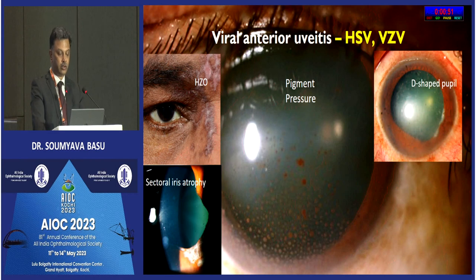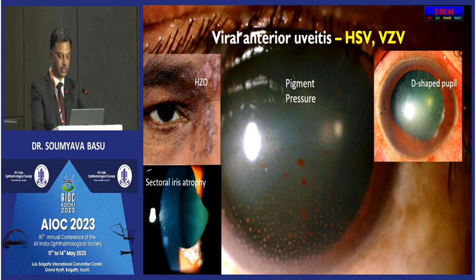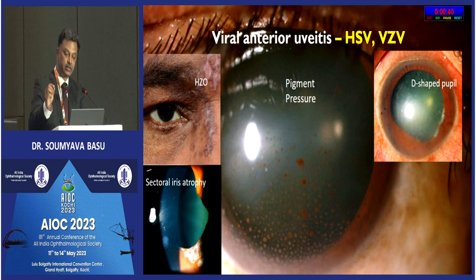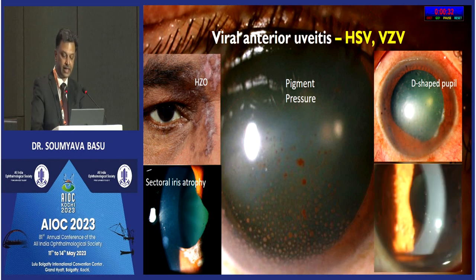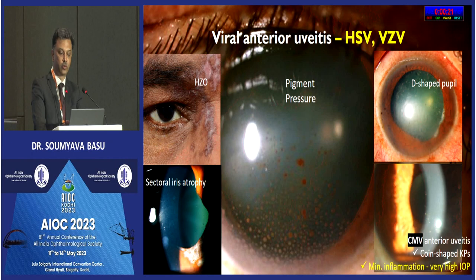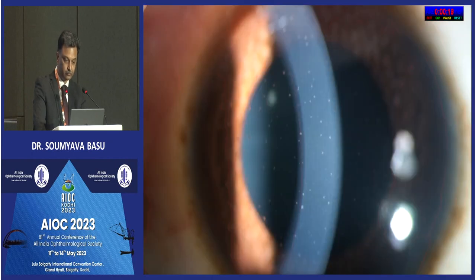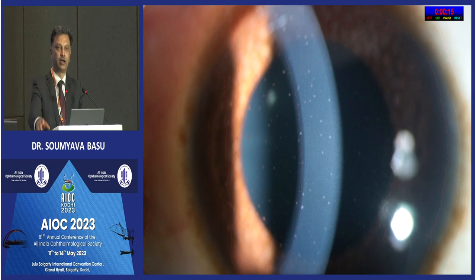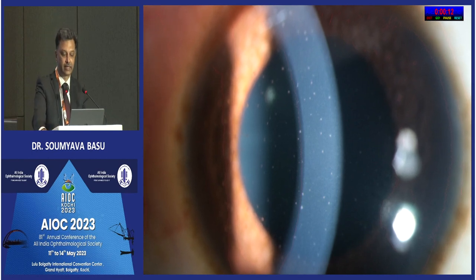The last granulomatous category: Fuchs uveitis syndrome — the patient would not have a history of redness or pain, coming instead with decreased vision or floaters. You see diffuse KPs on the corneal endothelium leading to the diagnosis of Fuchs uveitis syndrome. Remember to counsel the patient about the possibility of floaters post-operatively if planning cataract surgery. Other causes of white eye anterior uveitis: Behcet's disease may have very significant intraocular inflammation but not much circumciliary congestion. Juvenile idiopathic arthritis in children and masquerades also generally have no red eye.